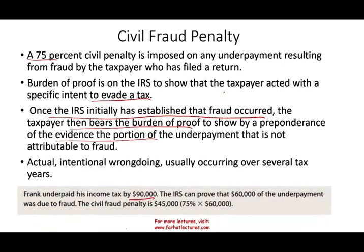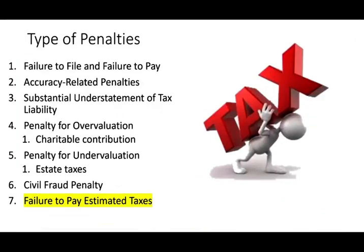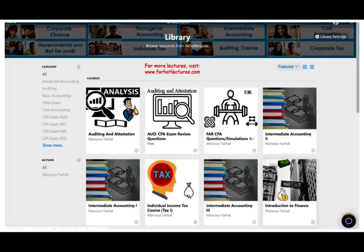Frank underpaid his taxes by $90,000. The IRS can prove $60,000 was underpayment due to fraud. The penalty is $60,000 times 75%. In the next session, I will cover another common tax penalty: failure to pay estimated taxes — a common topic tested on the CPA exam. Visit my website if you are serious about studying for your CPA exam; I have a lot of resources to help you pass. You invest in your career once, and it's a 40 to 50 year investment. Study hard, I'm always here to help you, and good luck.